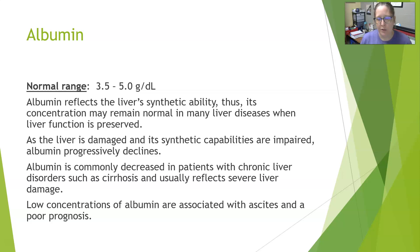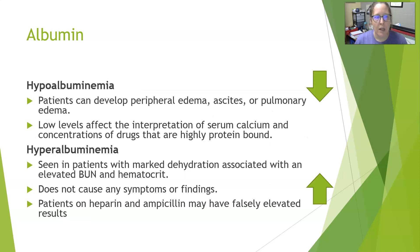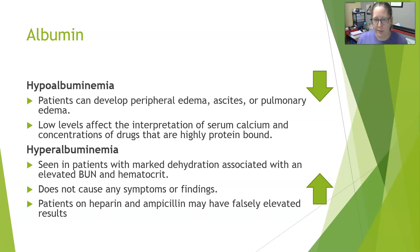Low concentrations of albumin are associated with ascites — the accumulation of fluid in the abdominal area — and also with a poor prognosis. Hypoalbuminemia, meaning low albumin levels in the blood, can cause patients to develop peripheral edema, ascites, and pulmonary edema. There is fluid retention in all of the places: in the legs (peripheral edema), in the abdomen (ascites), and around the lungs (pulmonary edema).